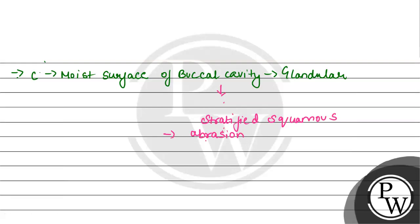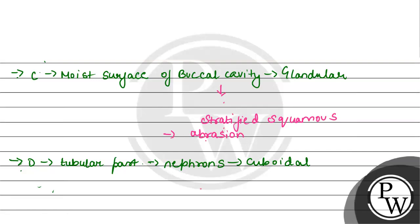Option D is the tubular part of nephrons, paired with cuboidal epithelium. This is the correct pairing, because the lining of the tubular part of nephrons is indeed lined with cuboidal epithelium. It plays an important role in absorption and secretion.